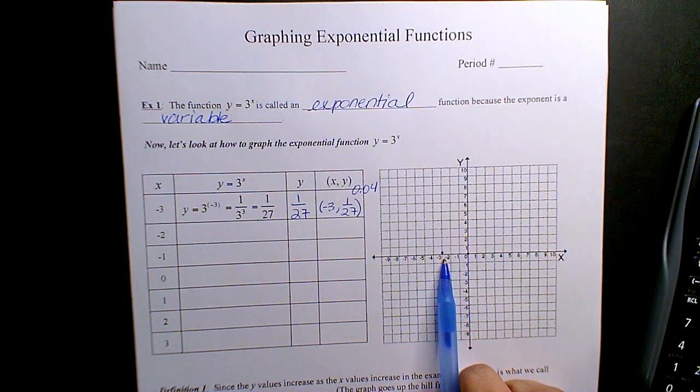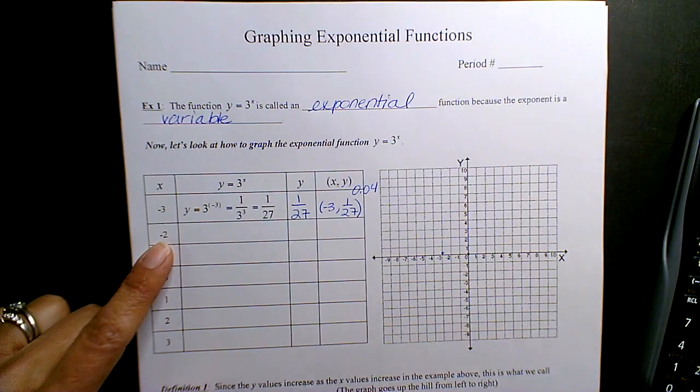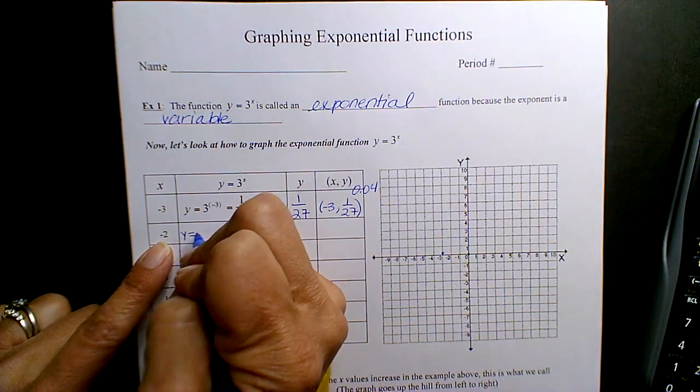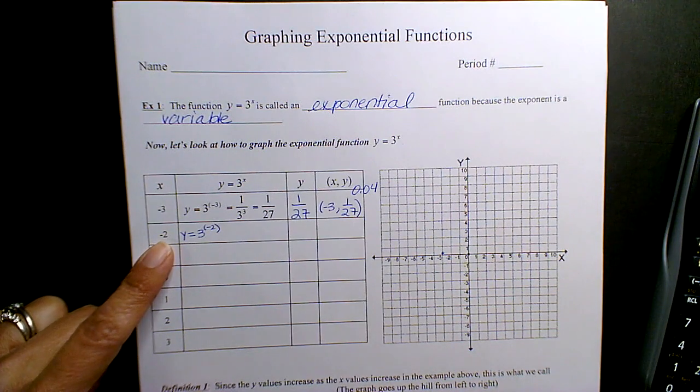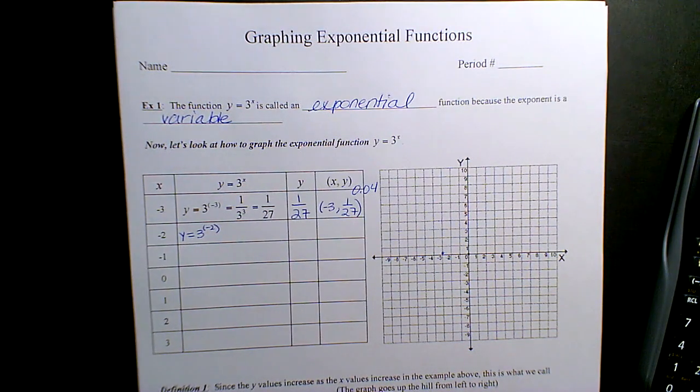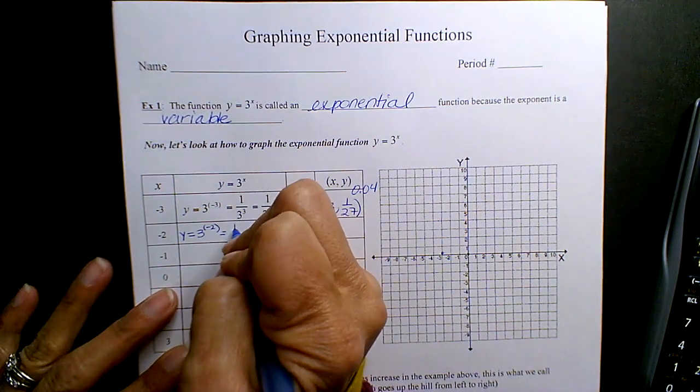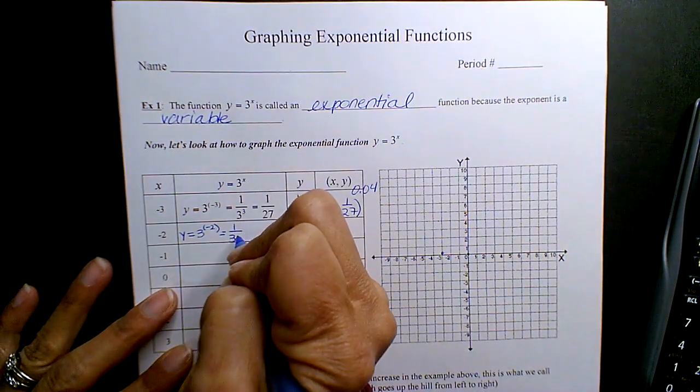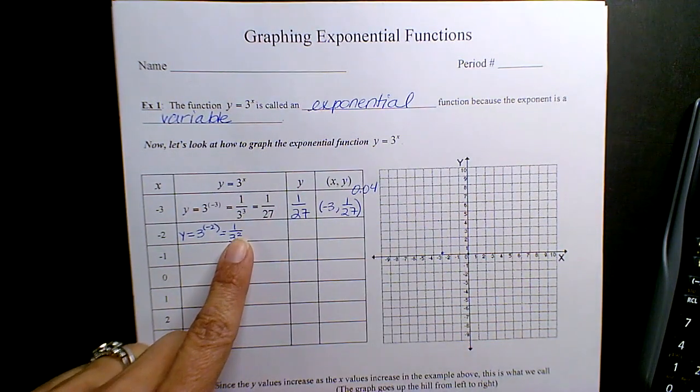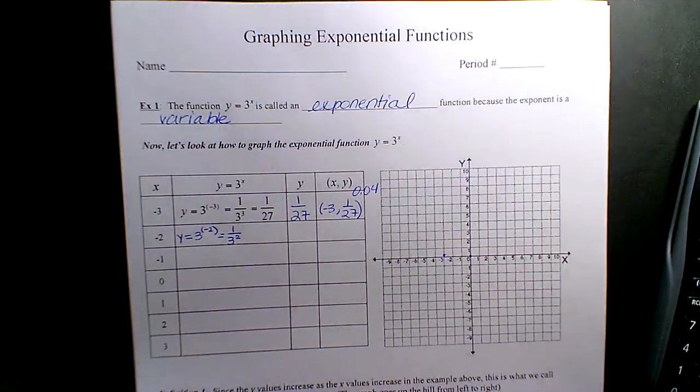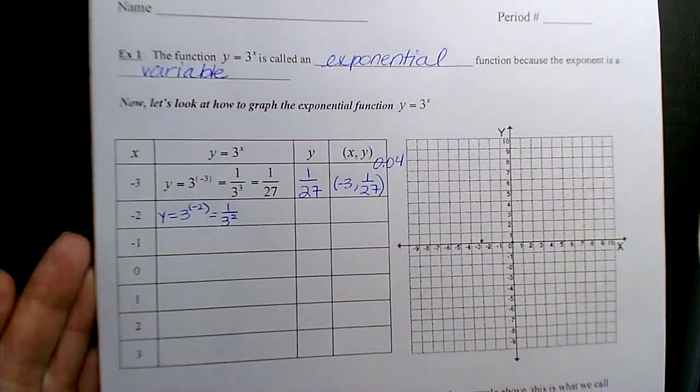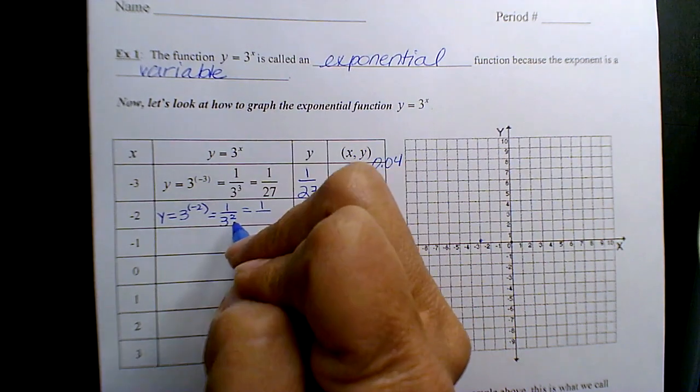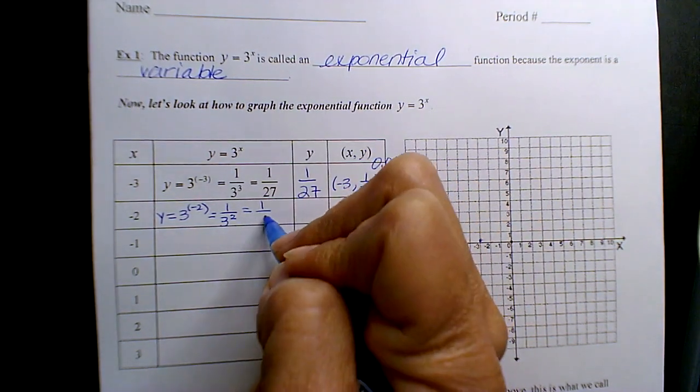Go to the next one. If I substitute negative 2, y equals 3 to the negative 2. If you use your properties - I call it the reciprocal property, but it's the negative exponent property - you can reciprocate, move the base 3 down, the 2 exponent now becomes positive. What's 3 times 3? 9.